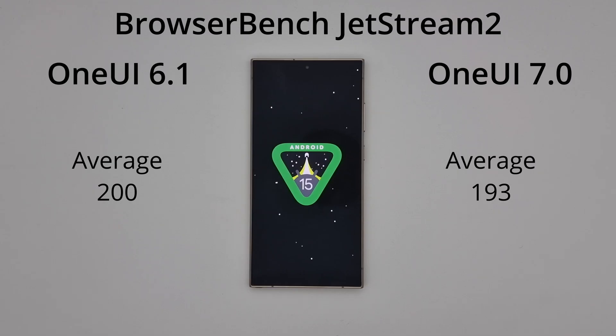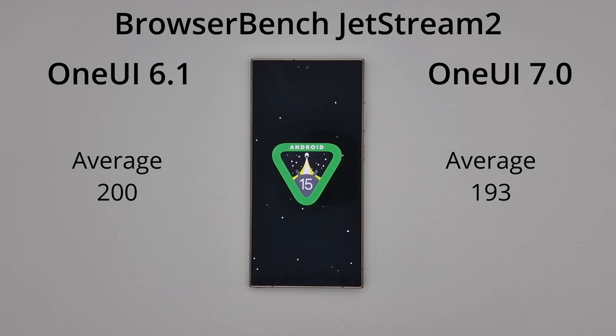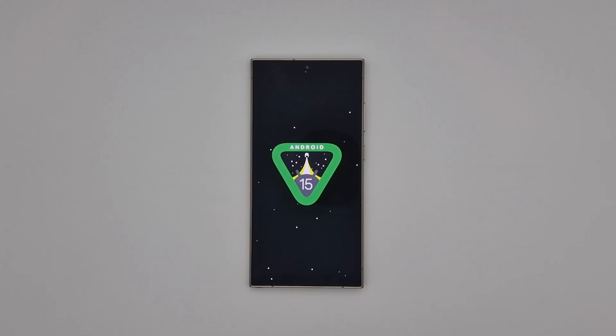So overall, not massive improvements here in One UI 7, apart from those initial Geekbench results. So what are your thoughts down below? Have you noticed any improvements?